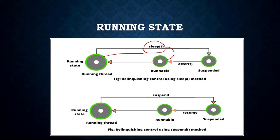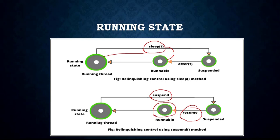Another method is the suspend method. When a thread is suspended using the suspend method for some time in order to satisfy a particular condition, a suspended thread can be revived using the resume method. Maybe a thread has been suspended for some reason, but if you want to revive it you use the resume method. Again, instead of going straight into the Running state, it will queue up in the Runnable state until its turn comes.